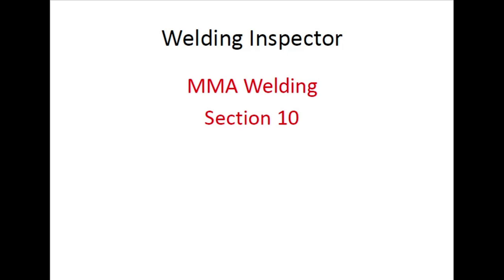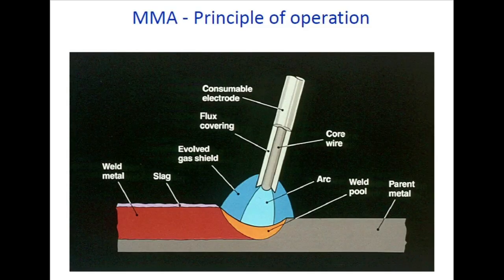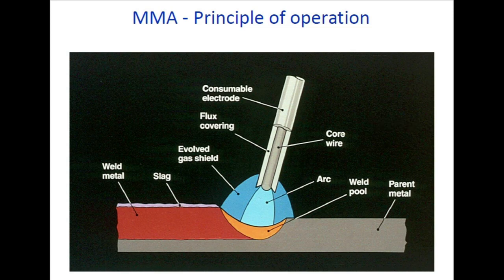Section 10 is manual metal arc (MMA) welding. The principle of operation: MMA welding uses a consumable electrode with flux covering. The flux is used for shielding the weld metal, improving weldability and strength. The flux covering prevents contamination from the atmosphere, produces slag, and the arc creates the weld pool and melts the filler metal.